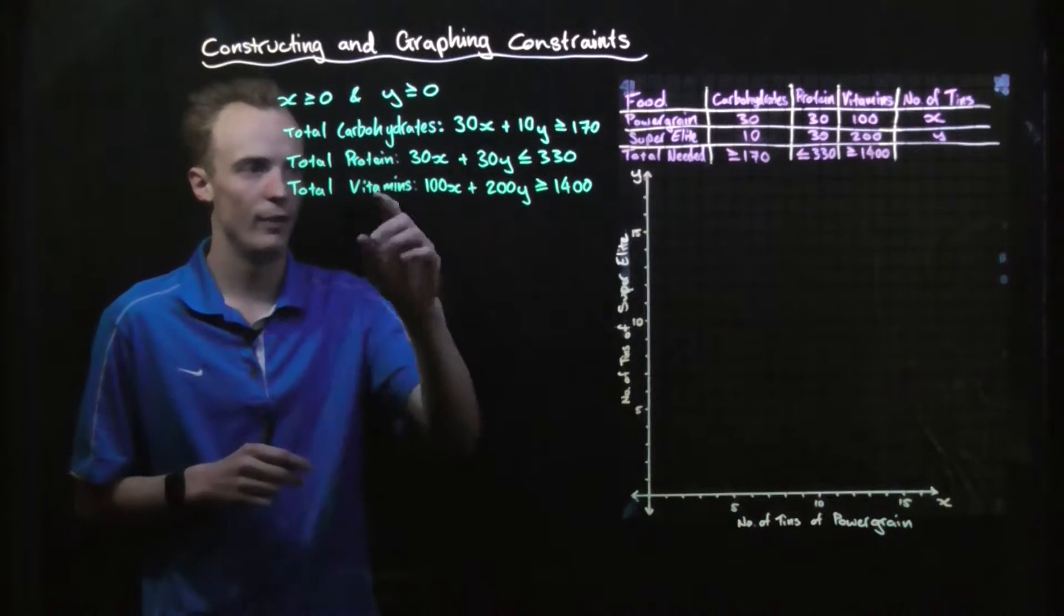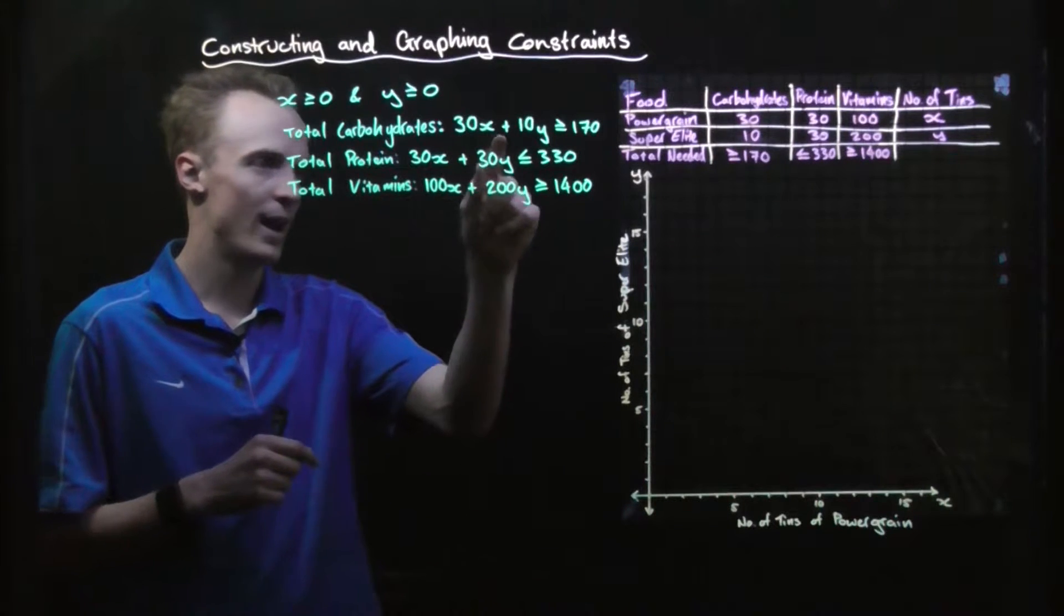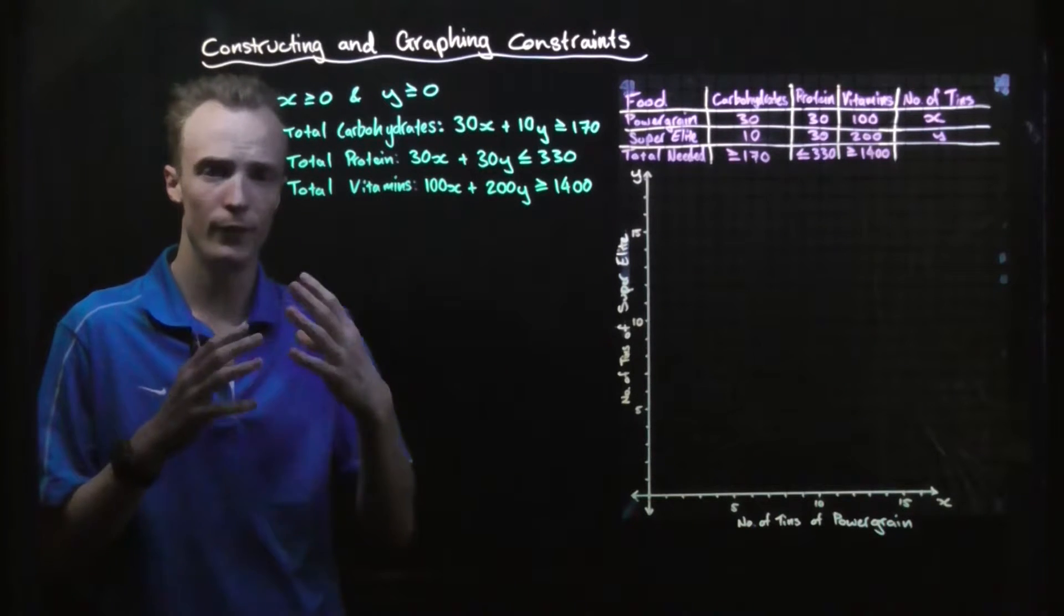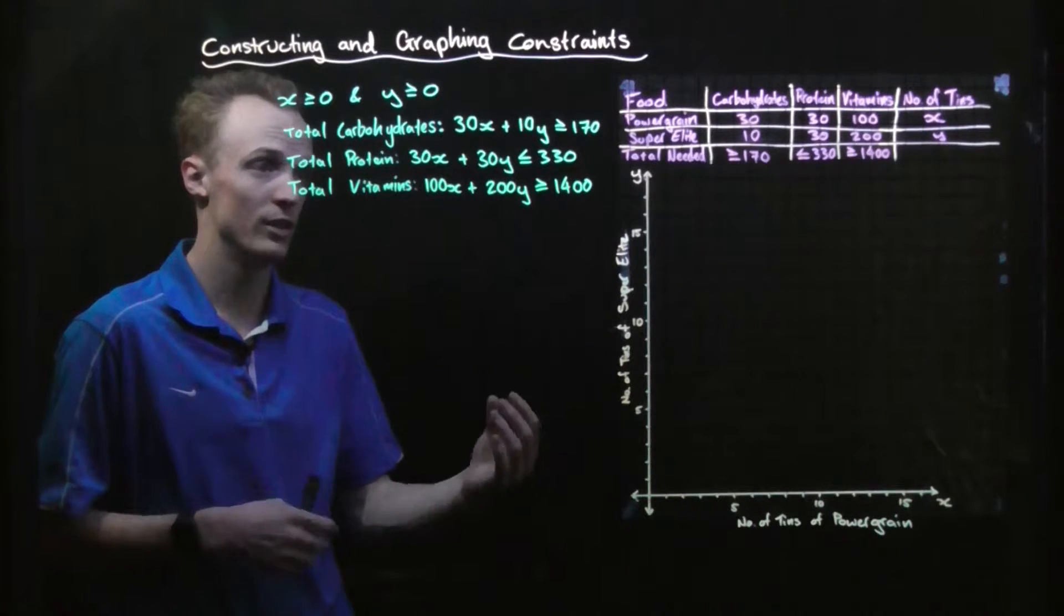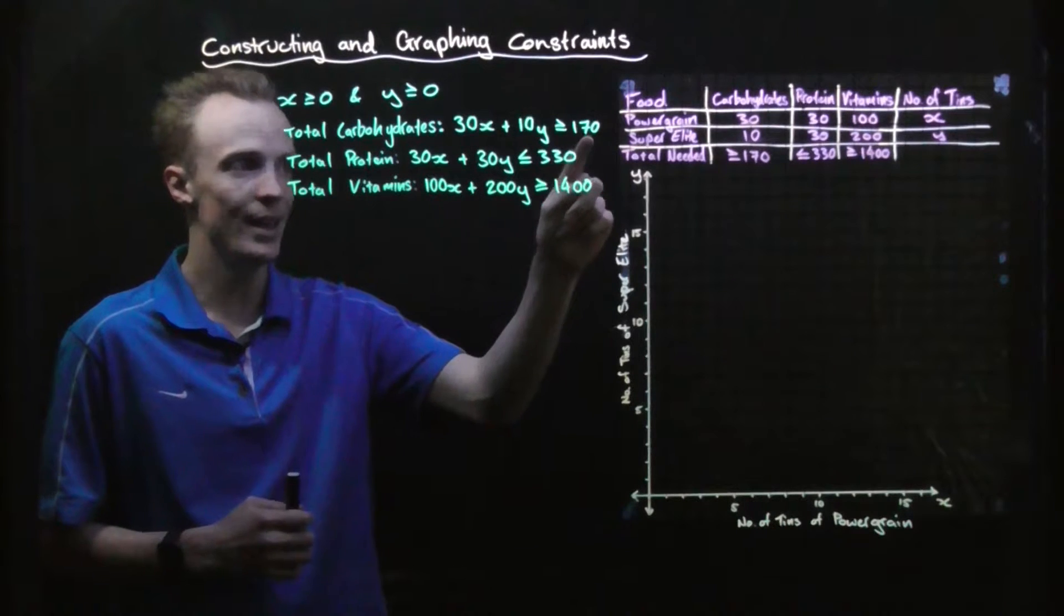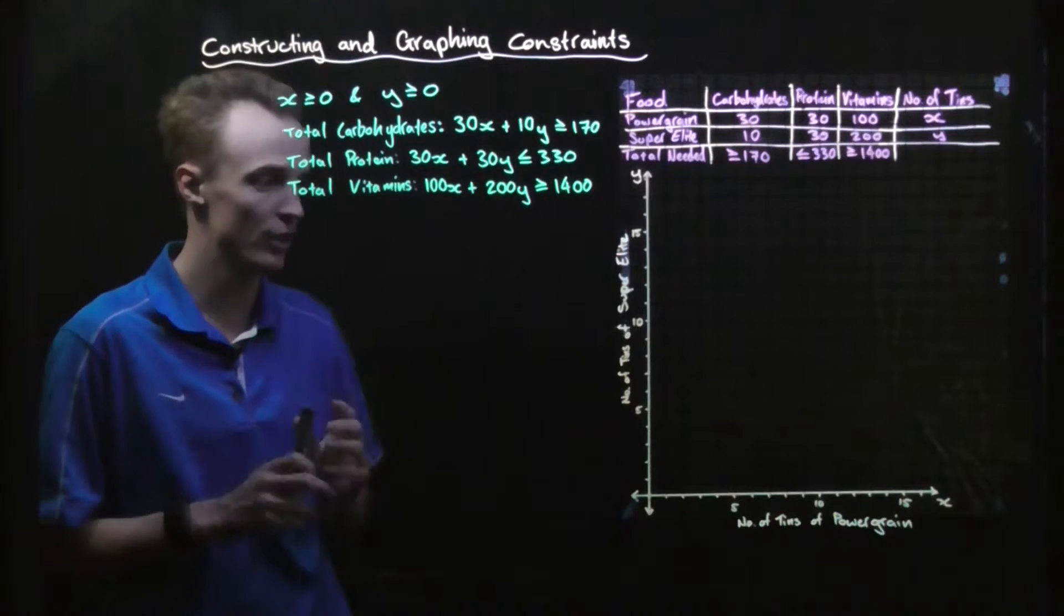In order to graph each of these constraints we need to take a look at this inequality and graph the line as if it's an equation. So we have to graph 30x plus 10y equals 170 as our first step for the carbohydrates, which I'm going to do now.